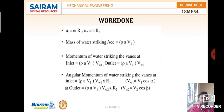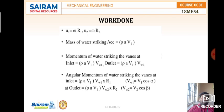The momentum of water striking the vanes at inlet is rho·a·v1·vw1, where vw1 is the whirl velocity at inlet. For the outlet it is rho·a·v1·vw2. The angular momentum at inlet is rho·a·v1·vw1·r1, and at outlet it is rho·a·v1·vw2·r2, where r1 and r2 are the radii of the rotor.